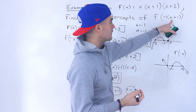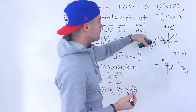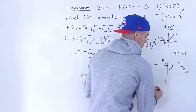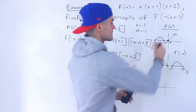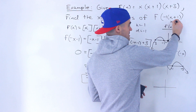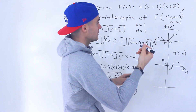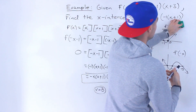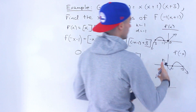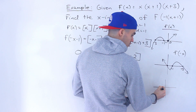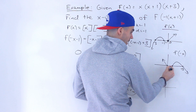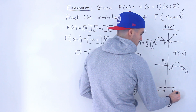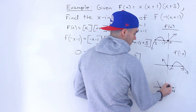Then the d value of negative 1 takes this reflected function and shifts it one unit to the left — since x plus 1 can be rewritten as x minus negative 1, the d value is negative 1. So 0 shifts to negative 1, positive 1 shifts to 0, and positive 3 shifts to positive 2.